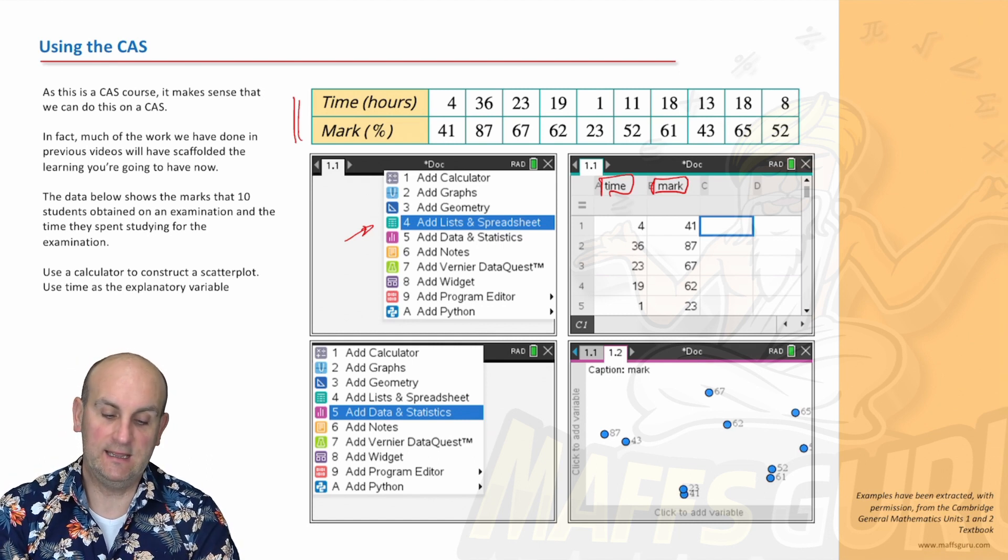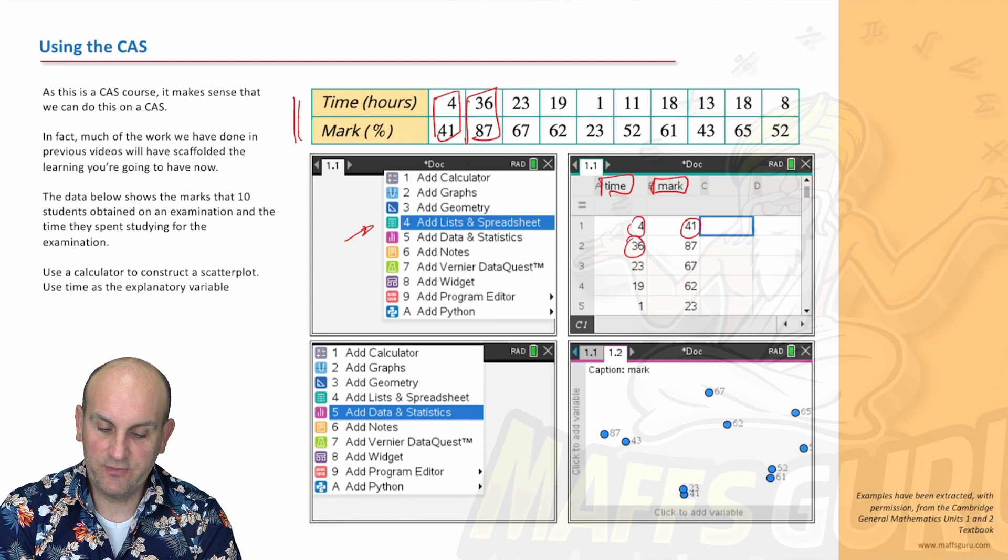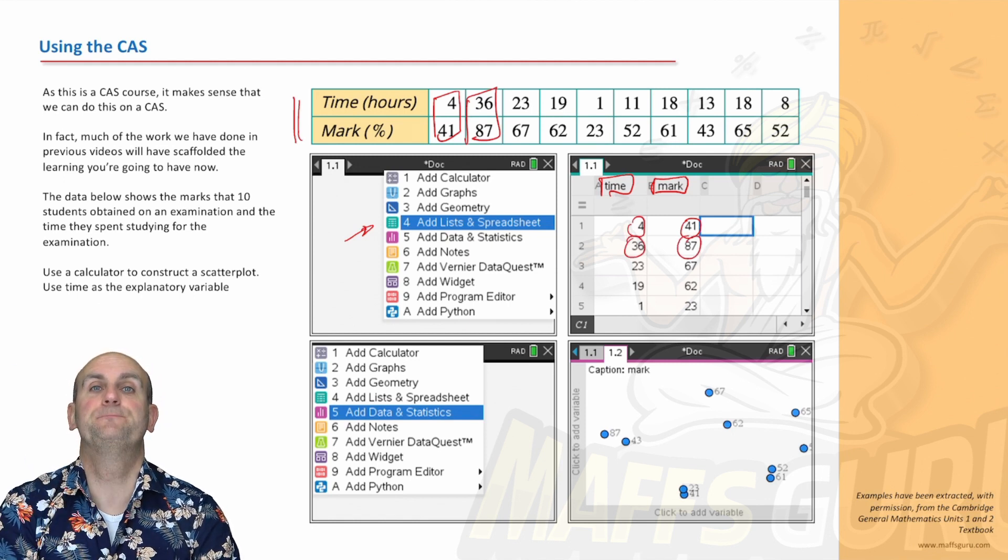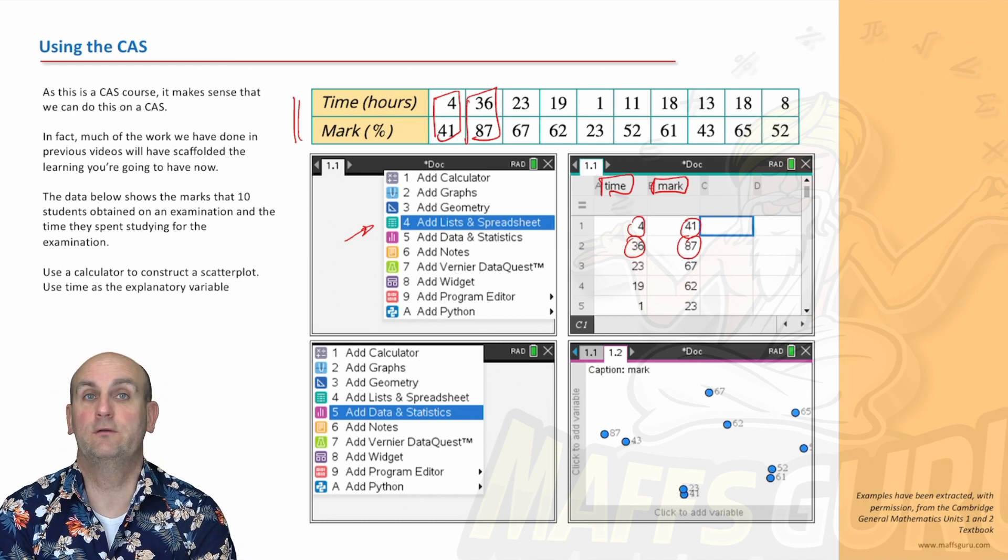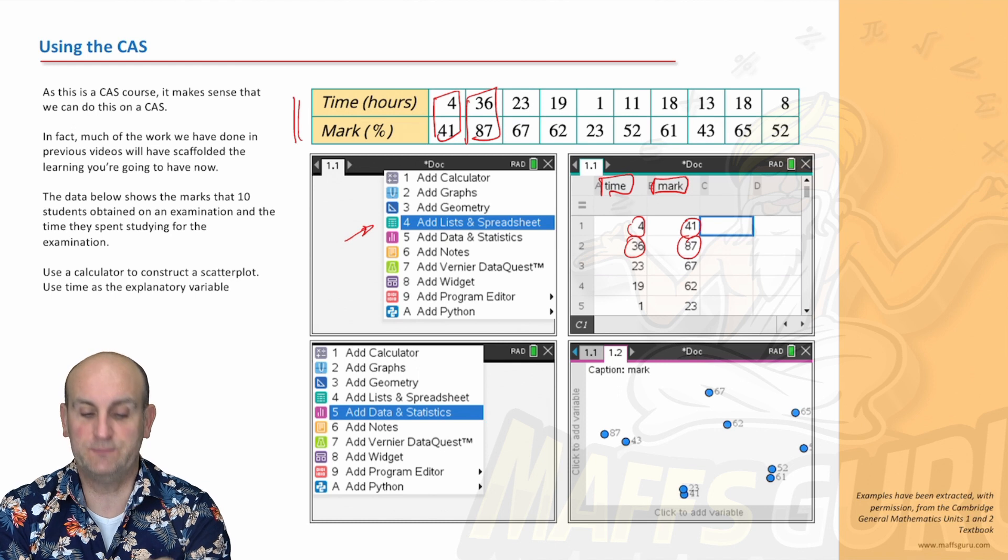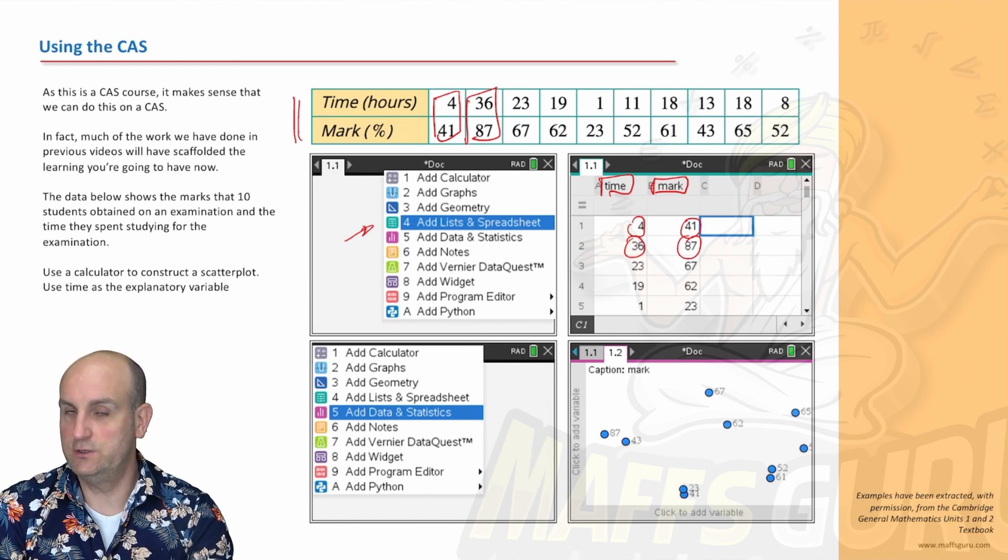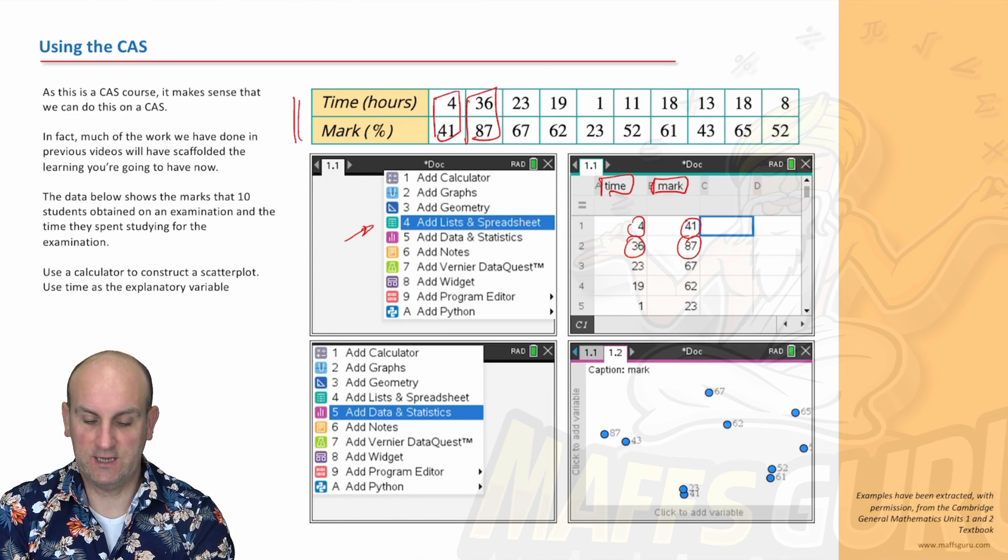And then I've just put in each of the values, 4 and 41, 36 and 87, and I've put all of those data in. Now, my students have recently done the test and unfortunately, some of them have got incorrect answers because they weren't accurate. They just put the values in and they didn't go back and check them. So to make sure that you get this right, once you put the data items in, go back and check them. So we've got them in.